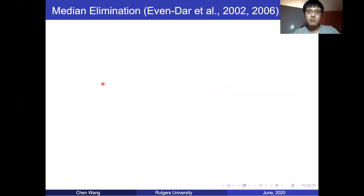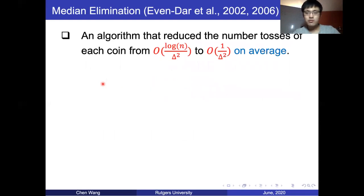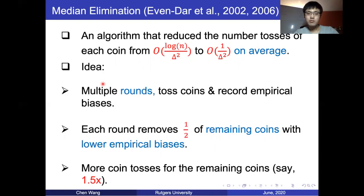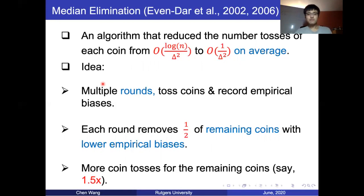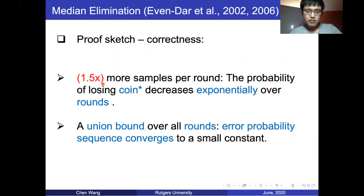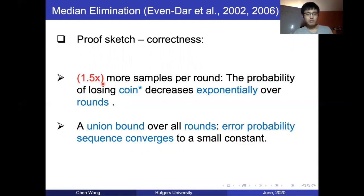The median elimination algorithm, proved by Even-Dar et al., actually reduces the number of coin tosses per coin from O(log N / δ²) to constant. The idea is to use multiple rounds: at each round we toss the coins to record empirical biases, then remove half the coins with lower empirical biases. The correctness can be proved by the fact that at each round we increase the number of coin tosses for coin* exponentially, so the probability of losing coin* decreases exponentially. Applying a union bound over all rounds, we get a convergent probability of losing coin*, so with constant high probability we retain coin* at the end.